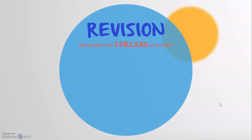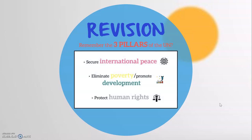Well, they are: secure international peace, eliminate poverty and promote development, and protect human rights. Today we are going to cover all three of them in order to have a deeper understanding of the UN's work.